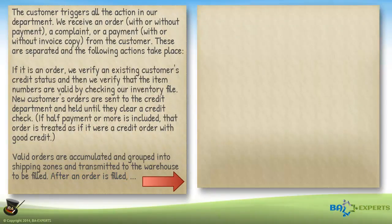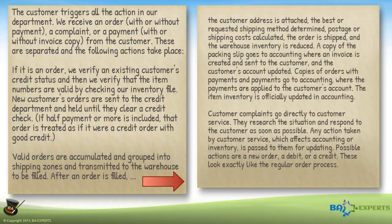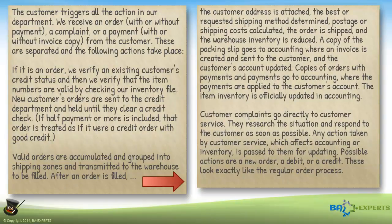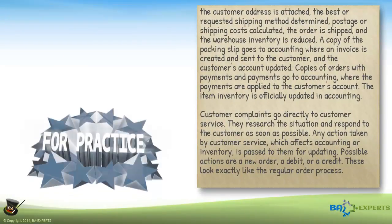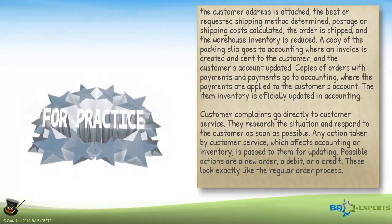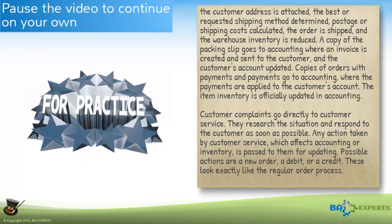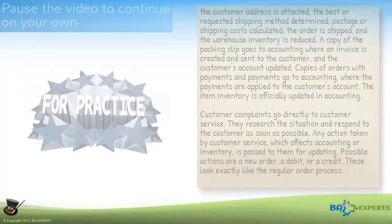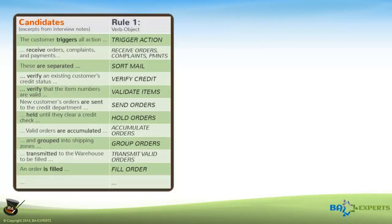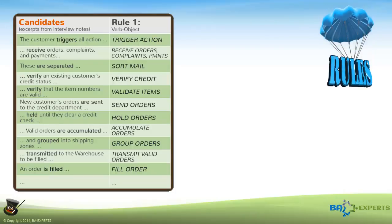I could continue reading through the entire interview notes, but I think this suffices to give you the flavor of the process. For practice, you might want to review the remaining interview notes and complete this step on your own. Now that you have a list of potential internal processes, you need some additional rules to confirm that these are indeed good candidates.